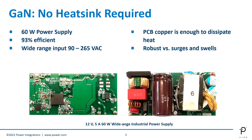That allows us to build power supplies for applications well beyond the classic laptop adapters. We're involved in building power supplies for consumer products, TVs — really anything you can name can benefit from GaN. Not only do you see an increase in efficiency and reduction or elimination of the heat sink, but it's also more robust than silicon because GaN doesn't have the sharp avalanche that you see in silicon MOSFETs, so they're robust against surges and swells.